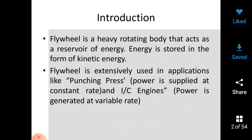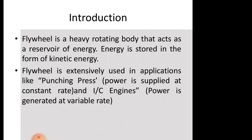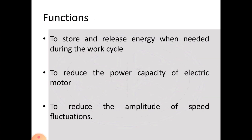These power variations cause changes in the shaft speed. The function of the flywheel is that when extra power is produced, it stores the energy, and when power decreases, it releases that energy. This reduces the variation in speed arising because of the cyclic variation in power — storing and releasing energy when needed during the work cycle.